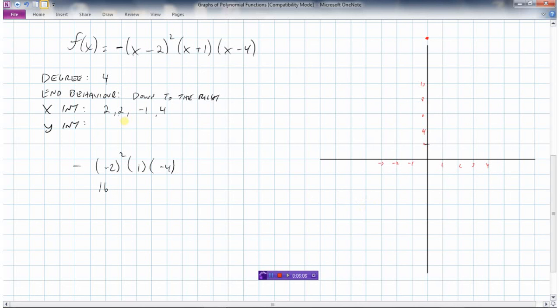So I have a double x-intercept at 2, so I'm just going to put a dot there, and a dot at minus 1, and a dot at 4. And my end behavior has to go down to the right. So it's going to come down like this, it's going to cross this here. Now I have a double root at 2, so I've got to come back down and bounce off the x-axis.